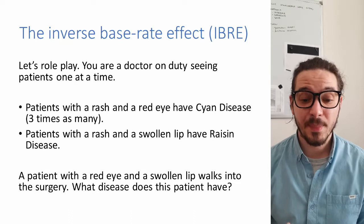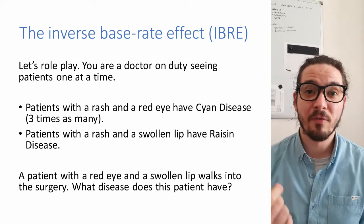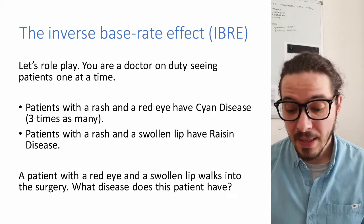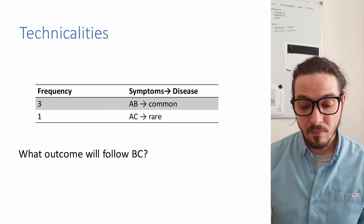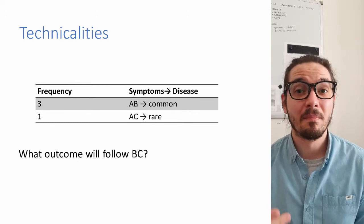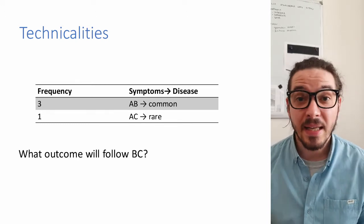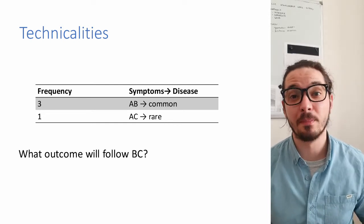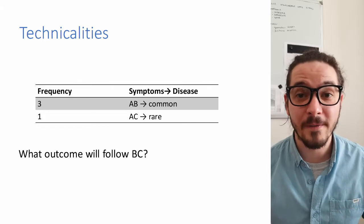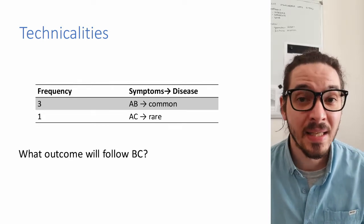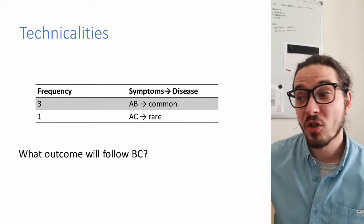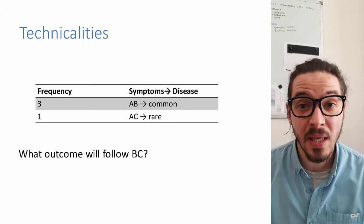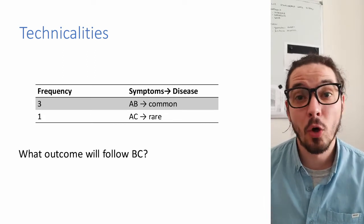Plainly put, participants systematically prefer the low-probability solution to these ambiguous scenarios. Here you can see a more technical description of this experiment. Participants usually start with a training phase where they learn the relationship between compounds of symptoms and their respective diseases, and then transition to a test phase where they make judgments about individual symptoms and their novel combination.